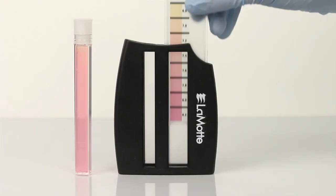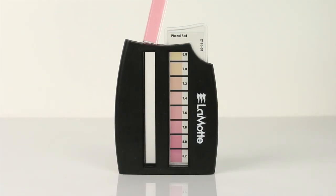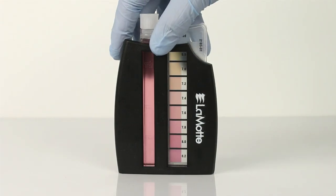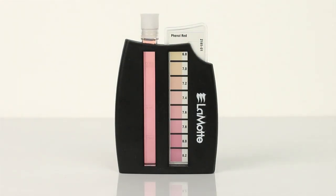Insert the phenol red octoslide bar into the octoslide viewer and place the vial into the viewer as well. Match the color of the sample to the color standard. Record results as pH units.